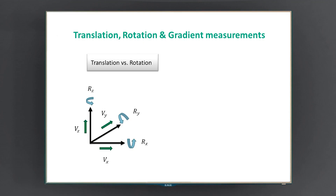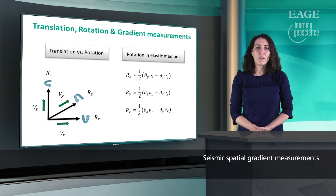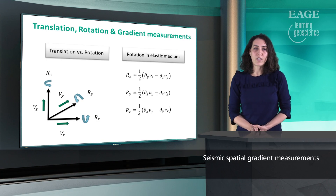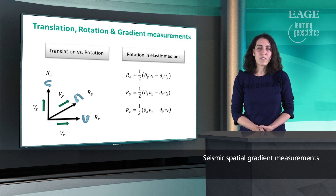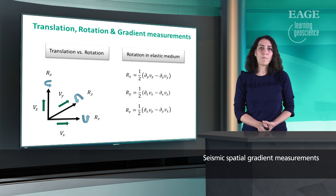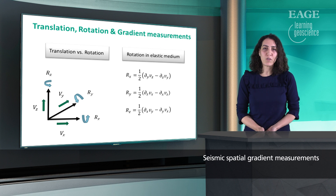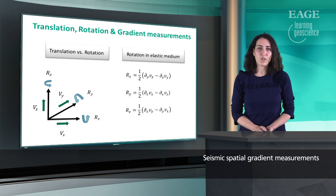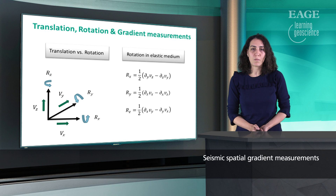To fully describe the motion of a rigid body, we can measure its linear motion along three orthogonal directions — particle velocity denoted by Vx, Vy, Vz — and also its rotation around the same axes: Rx, Ry, Rz. The relation between the particle velocity and the rotation is denoted with these equations. As you can see, the difference between spatial gradients indicates the rotational motion of a rigid body.